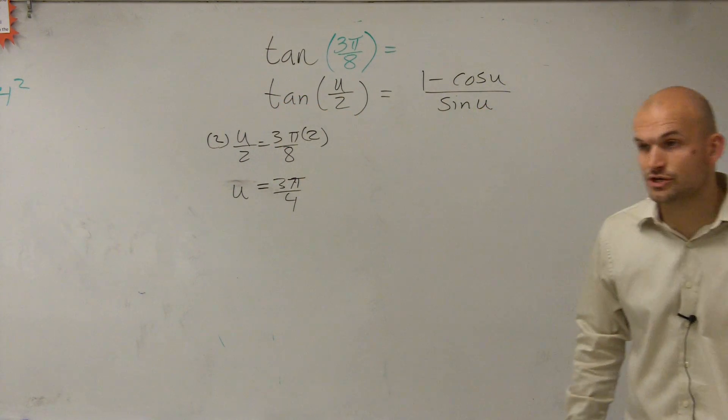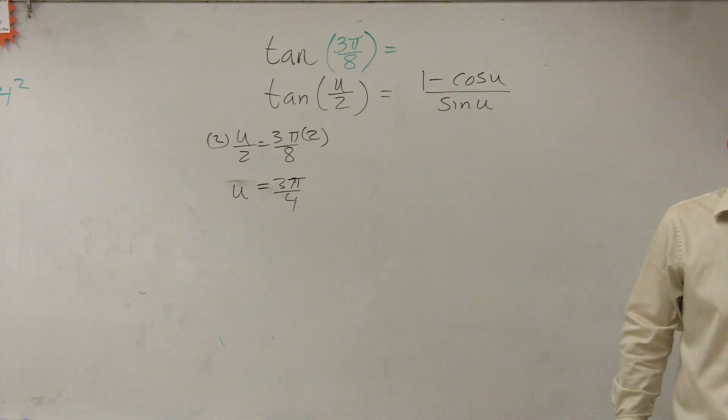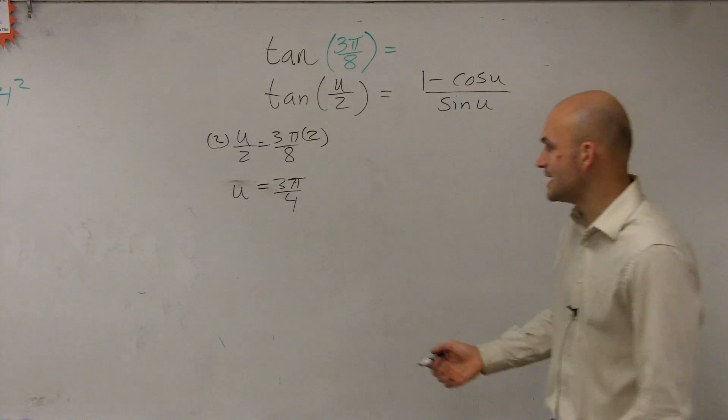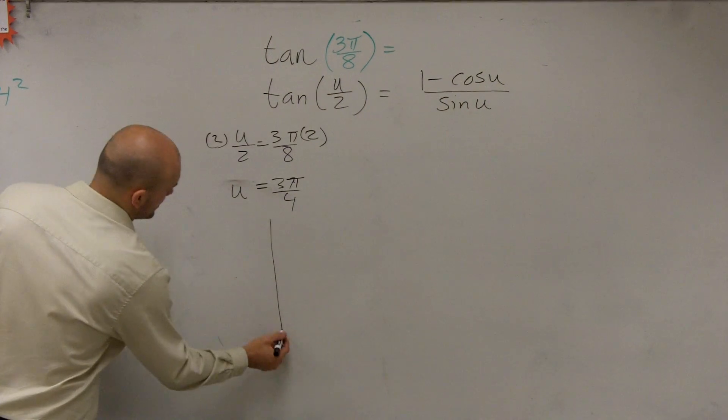Okay, now for tangent, we're not really concerned about, because we don't have a square root plus or minus, so we don't have to worry about that. And then we need to evaluate for the tangent at 3 pi over 4. So again, we go to our unit circle.